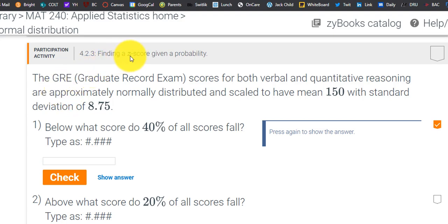It looks like we're going to try to find the z-score given a probability. So we can do this backwards and forwards - I can give you a probability, you give me a z-score, or I give you a z-score, you give me the probability.